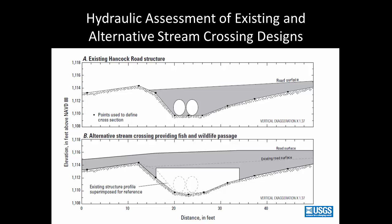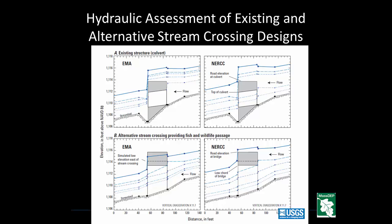One example from this study is a stream crossing at Churchill Brook at Hancock Road in Pittsfield, Mass. The top image illustrates the cross section of the upstream face of the existing stream crossing structure, and the bottom graph shows an alternative structure, shaded in gray, designed to meet the stream crossing standards and provide fish and wildlife passage. The top graphs show the simulated water surface elevation profiles for the 5- to 500-year floods at the Churchill Brook existing culvert, while the bottom graphs show the profiles for the alternative crossing structure designed using the stream crossing standards.